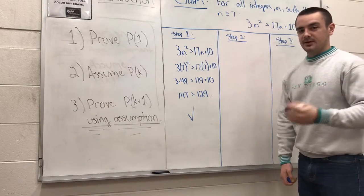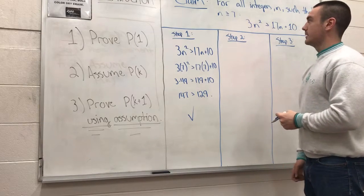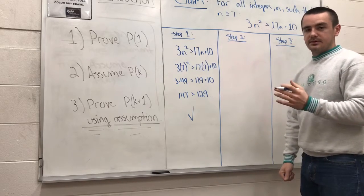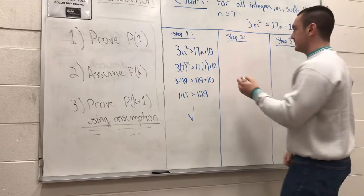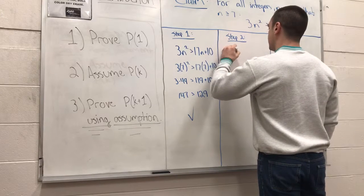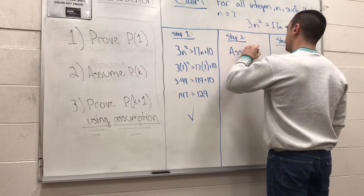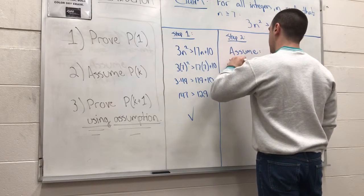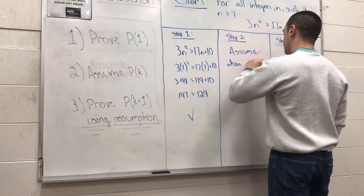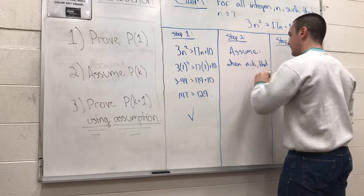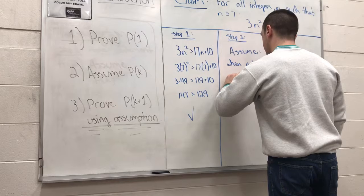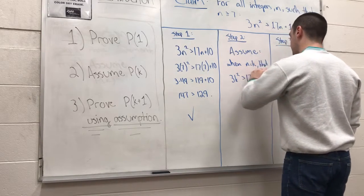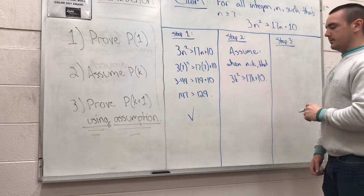Now we move on to step 2. Where we see n, we're going to put in the value k, and k is going to be greater than or equal to 7. We'll make a note of that. Now we assume when n equals k that 3k squared is greater than or equal to 17k plus 10.